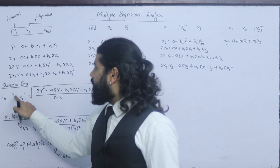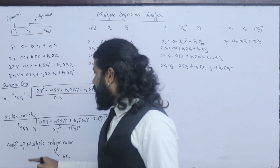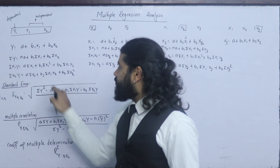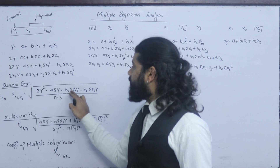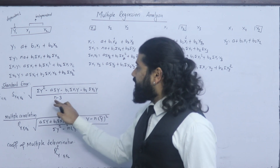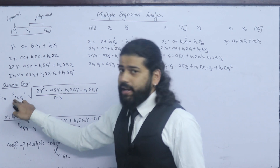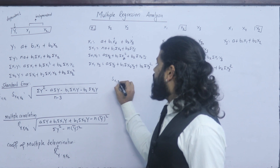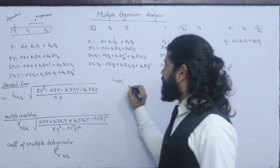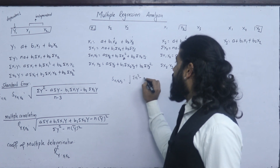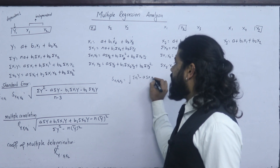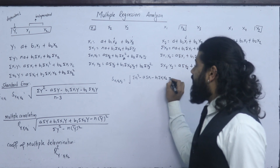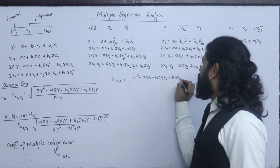This y is the dependent variable y, x1, x2. The standard error formula: sigma y·x1·x2 equals to the square root of summation y squared minus a times summation y minus b1 summation x1·y minus b2 summation x2·y, divided by n. We have a formula involving summation x1 squared minus a summation x1 minus b1 summation x1 x2 minus b2 summation x2.